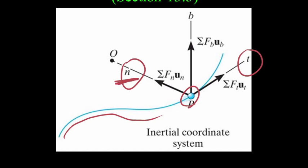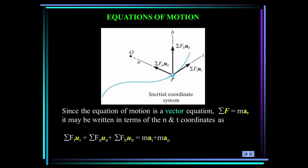The normal direction n always points towards the center of the radius of curvature. In a circle, the center of curvature is the center of the circle. The tangential direction t is tangent to the path, usually set as positive in the direction of the motion of the particle. Newton's equation of motion is a vector equation, so it's a simple matter to write it in terms of the normal and tangential coordinates. Remember there's no motion in the binormal direction, so the acceleration in that direction is also zero.